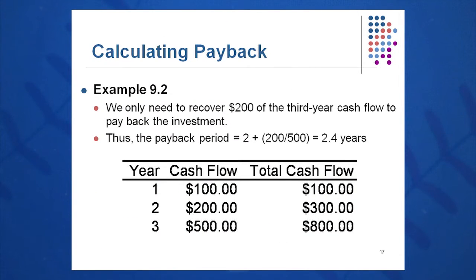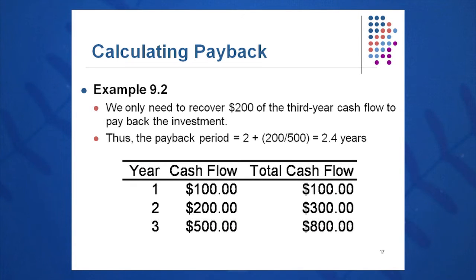She is not paid back in year one and not paid back in year two. But she is paid back sometime during year number three. Of the $500 in year three, you need $200 of it, or 0.4 years. So the payback period is 2.4 years.